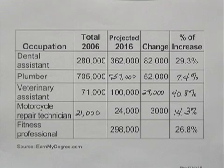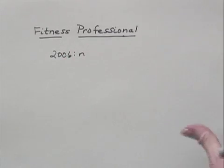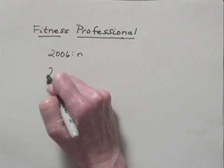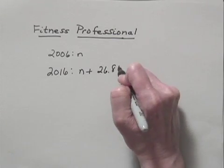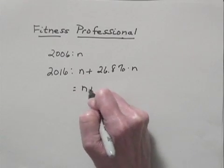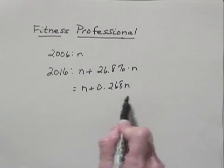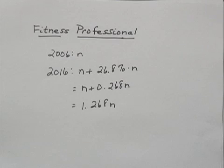Now let's look at the fitness professional. We will let N be the number of jobs in 2006 — that's the first thing we want to find here. If the number of jobs increases by 26.8%, then the number of jobs in 2016 will be N plus 26.8% times N, or N plus 0.268N. This is 1N plus 0.268N, so I have 1.268N for the number of jobs in 2016.